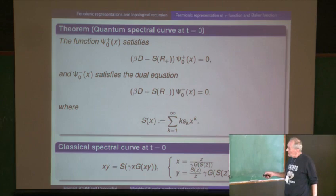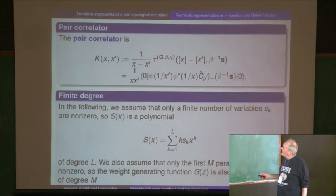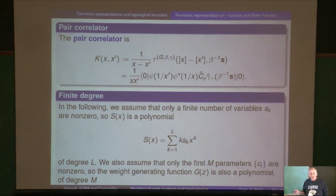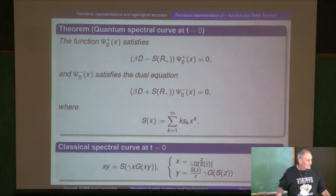In general it could be something else — this also holds for the Okounkov case, in which case you get the Lambert curve. Here is the list of kitchen ingredients that go into the stew of topological recursion. So you need a classical and a quantum spectral curve — we have it. You need the two-point correlators.